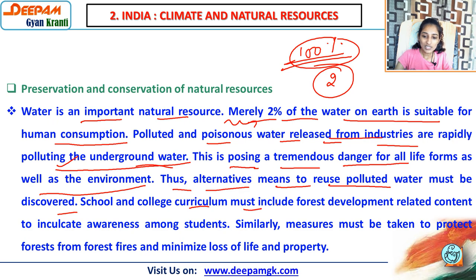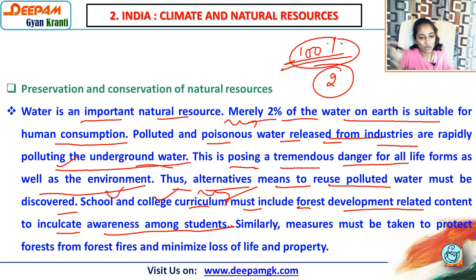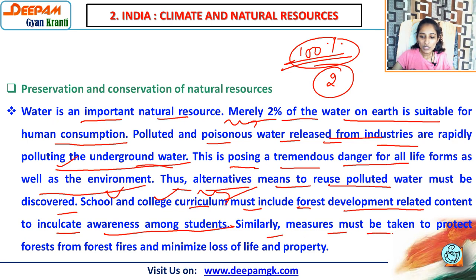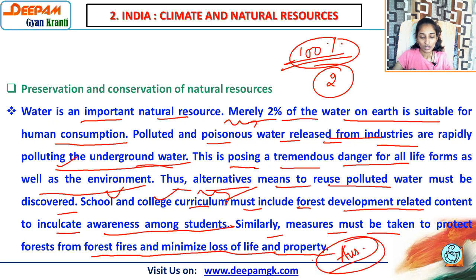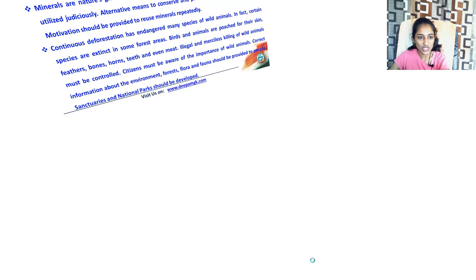School and college curriculum must include forest development content to create awareness among students — forest development topics should be compulsory in the syllabus. Measures must also be taken to protect forests from forest fires and minimize loss of life and property. For example, in Australia, a forest fire killed almost all the wildlife diversity including kangaroos — we must think about how to control such fires and minimize loss.